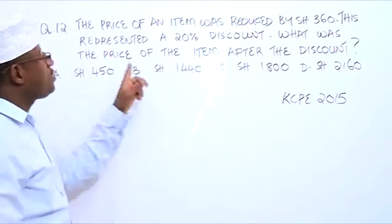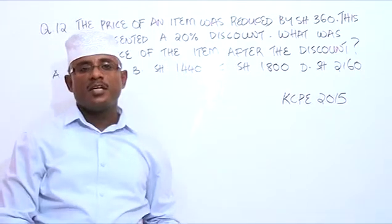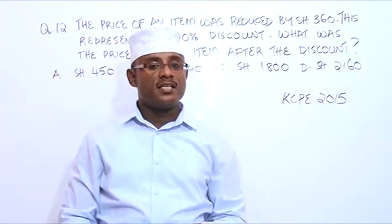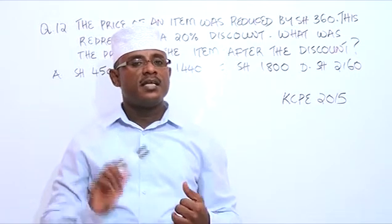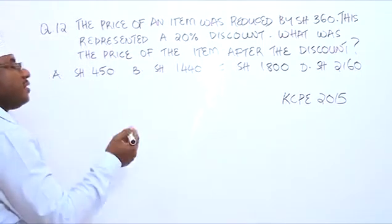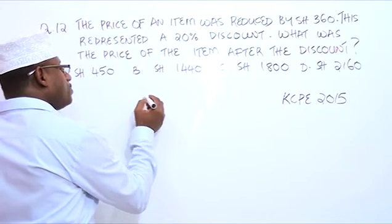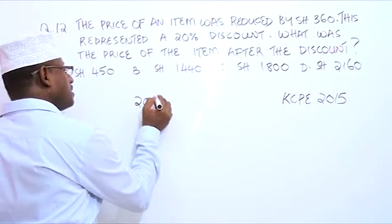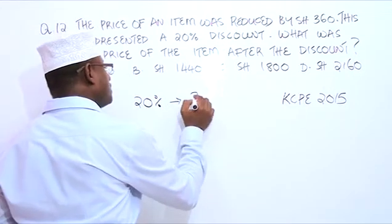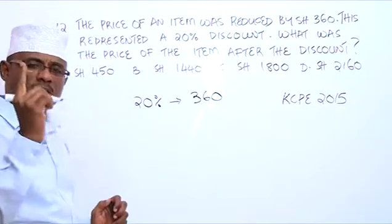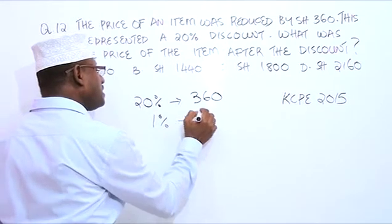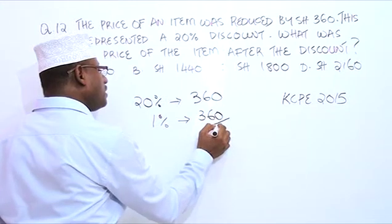The question is asking us: what was the price of the item after the discount? The price after the discount is going to be 80% — that is 100% minus the 20% discount. So we will say: if 20% (the discount) is 360 shillings, what about 1%? It will be 360 divided by 20.